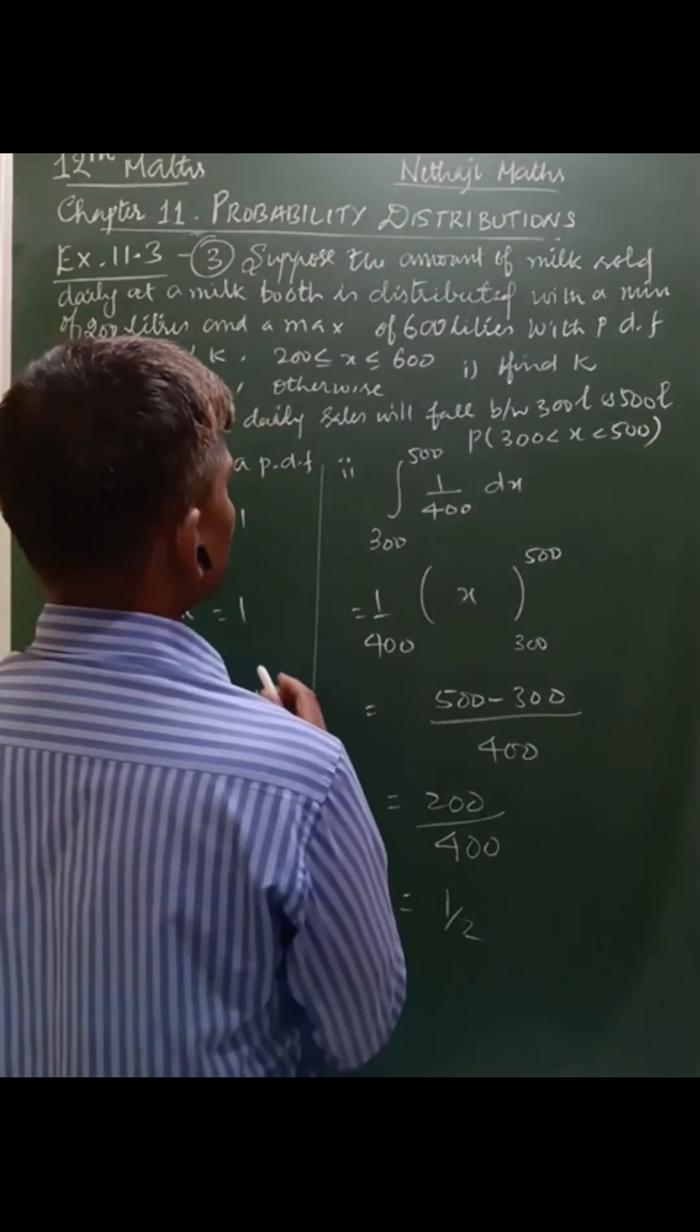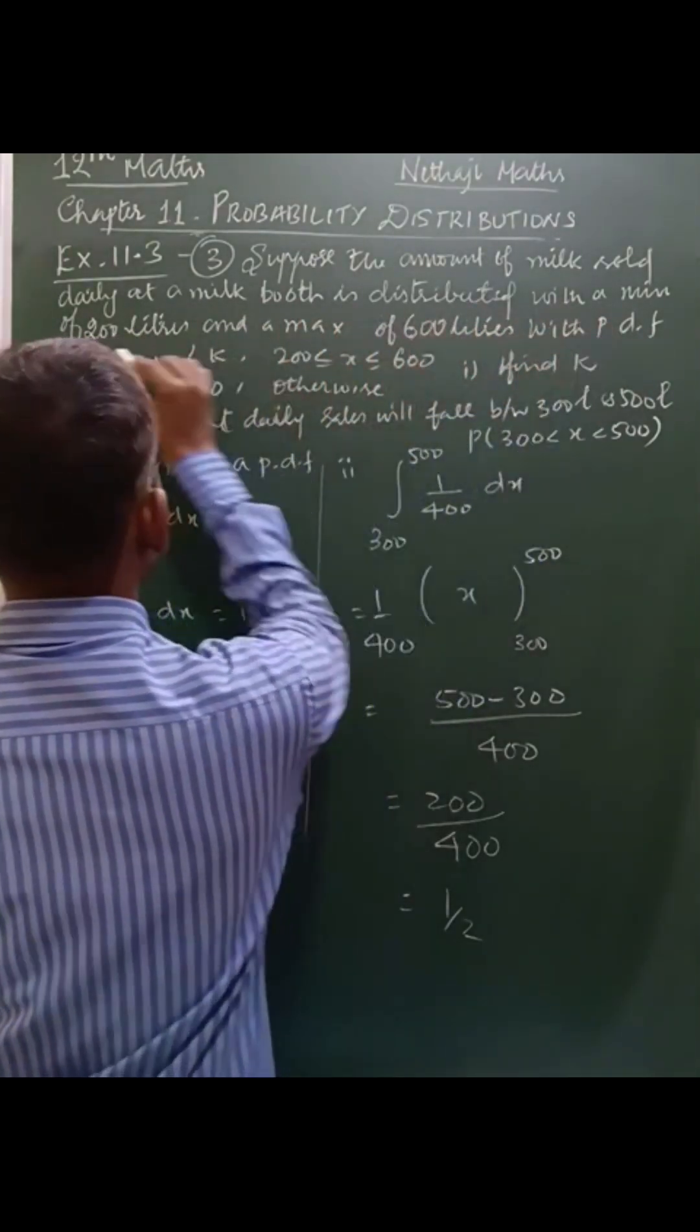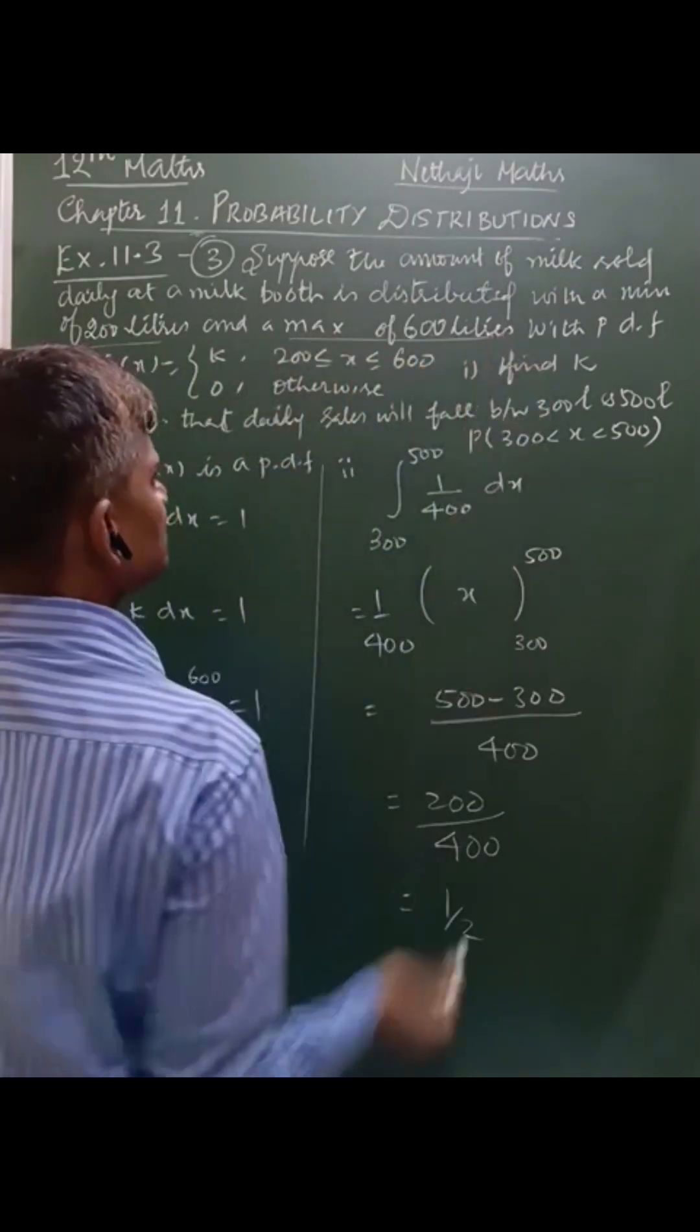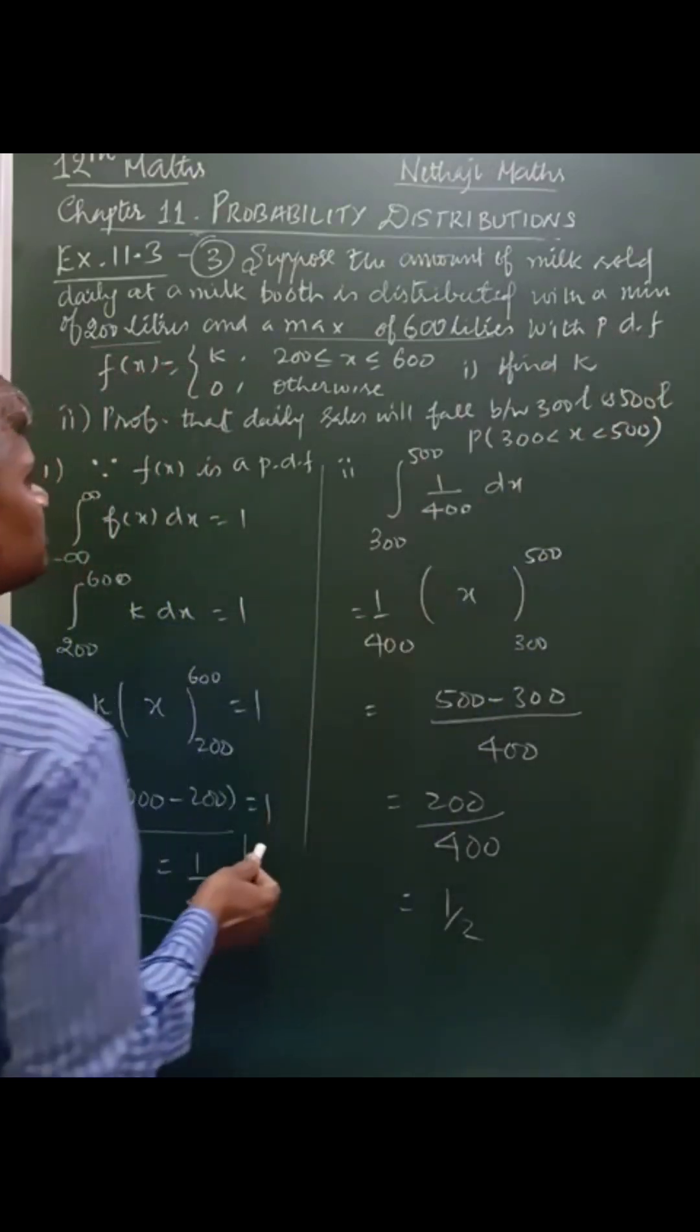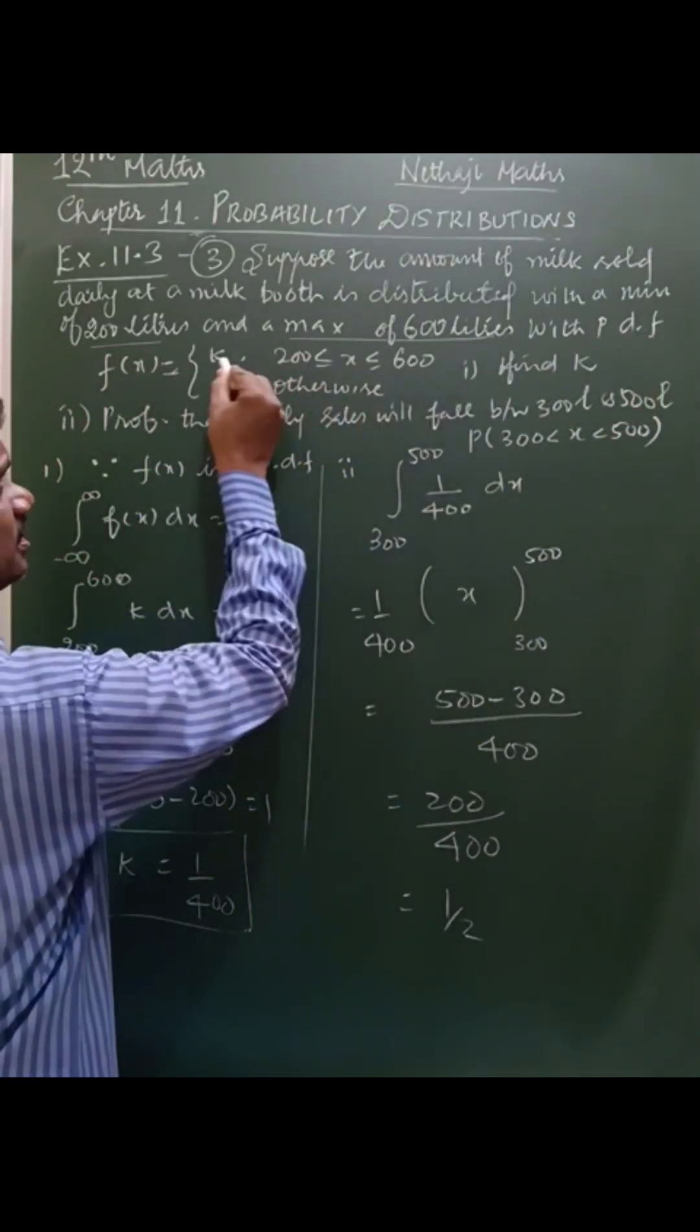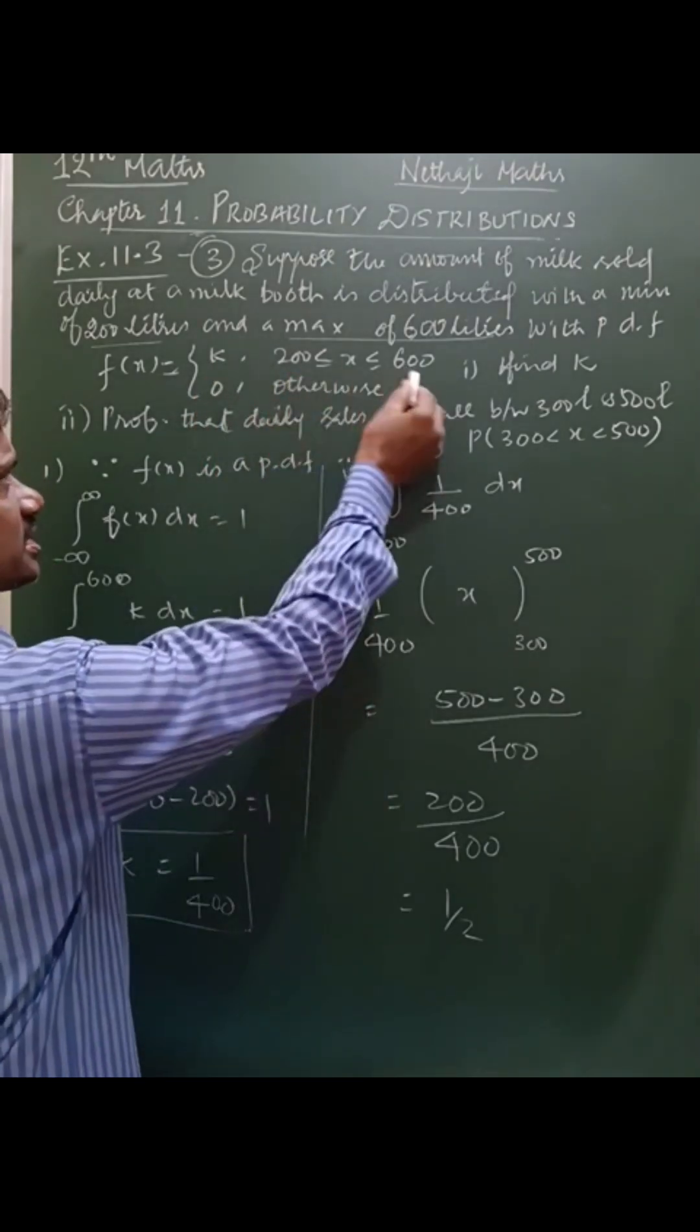The question is: suppose the amount of milk sold daily at the milk booth is distributed with a minimum of 200 litres and maximum of 600 litres with the probability density function. PDF means probability density function. The f of x is defined between 200 to 600 as k, 0 otherwise.